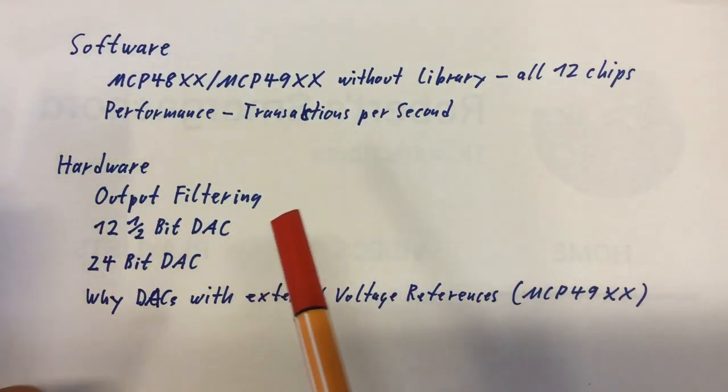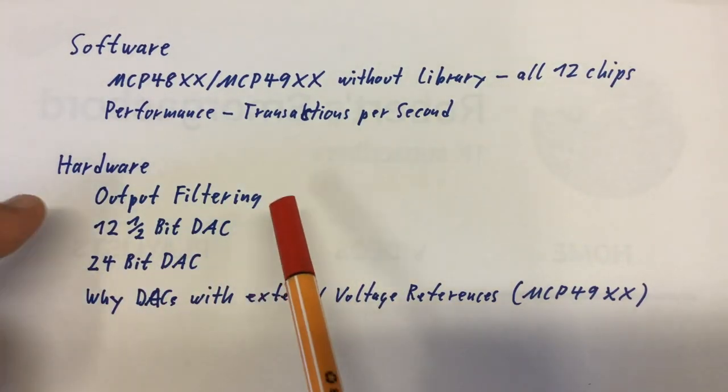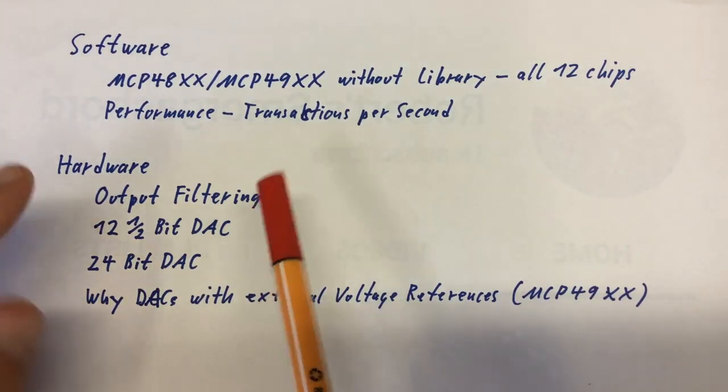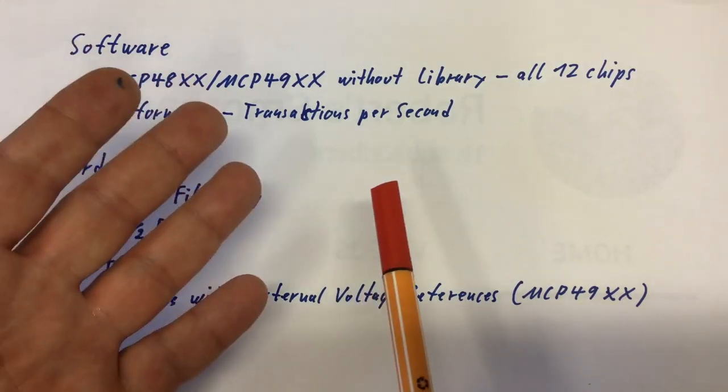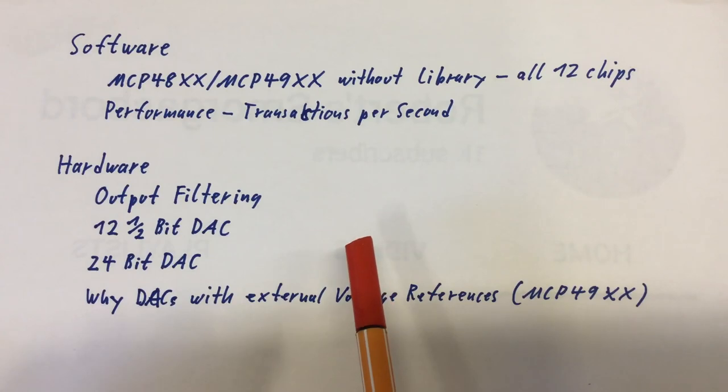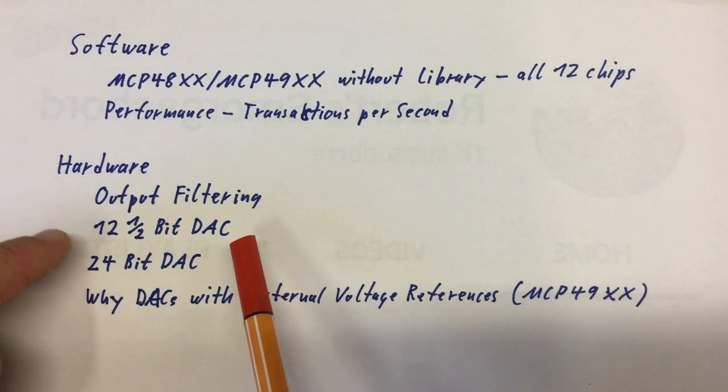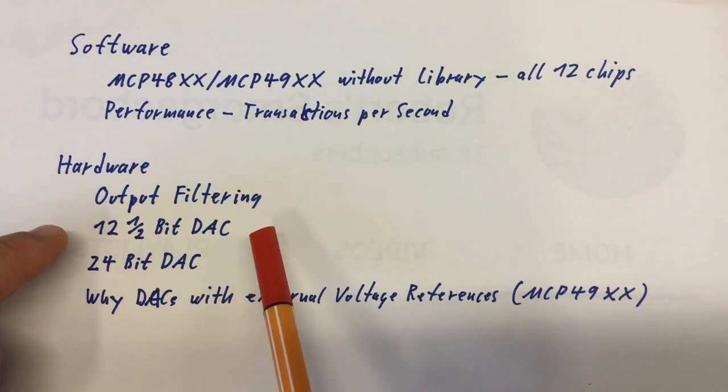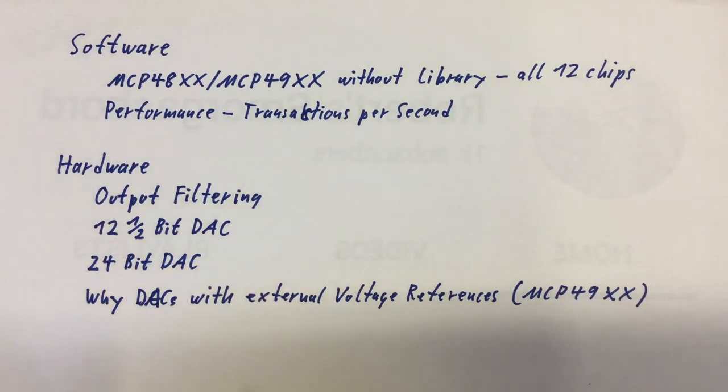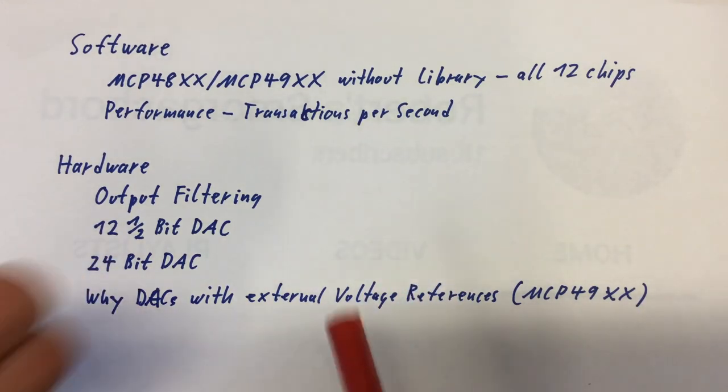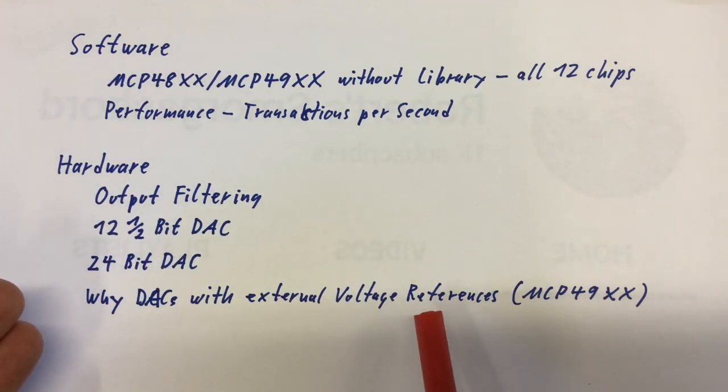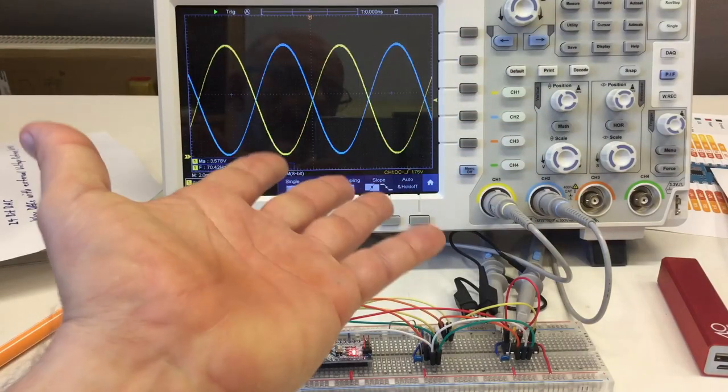I will also talk about hardware and definitely about output filtering. I have to admit, I omitted some important sections from the data sheets there. And maybe, I'm not quite sure yet, we will build a 12 and a half bit DAC or a 24 bit DAC. And we need to have a look at these MCP49XX types. I mean, what's the advantage of not having an internal voltage reference and needing an external voltage reference? Till then, bye!